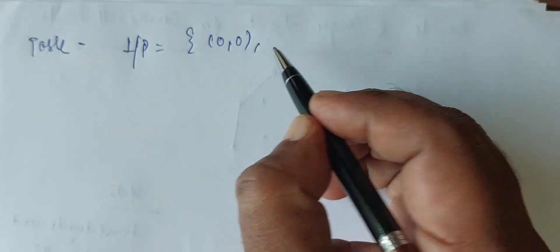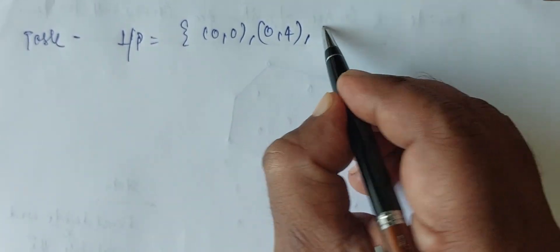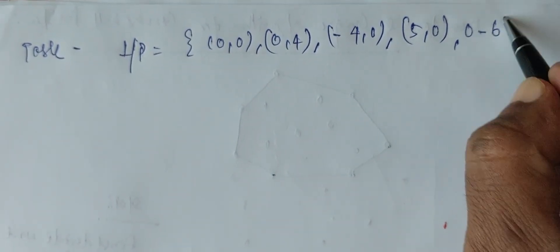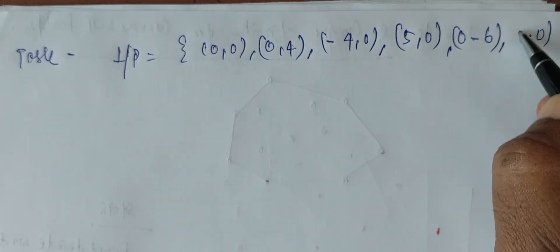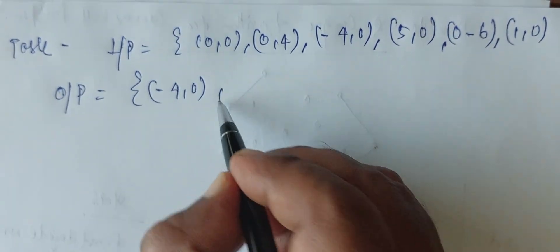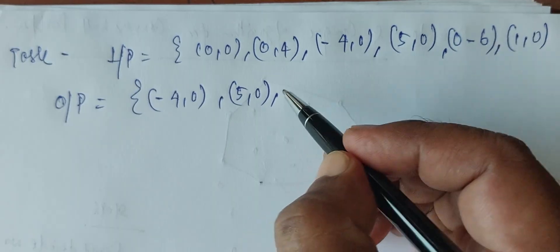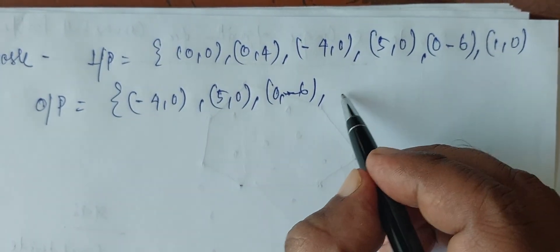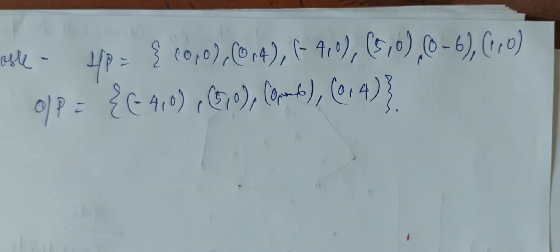Another example I am giving for your better experiments, that may be for your task purpose. The task is, input is (0,0), (-4,0), (5,0), (0,6), (1,0). My output I am also giving. Please try by yourself. Output definitely will be (-4,0), (5,0), (0,-6), and (0,4). Please do it by divide and conquer algorithm.